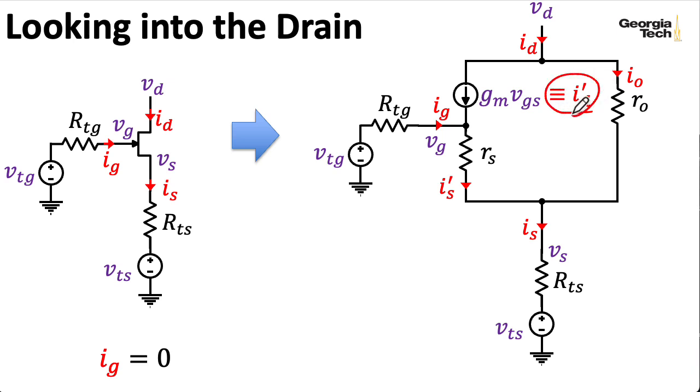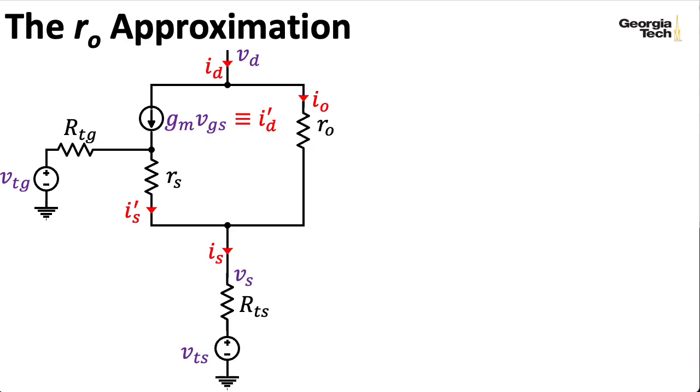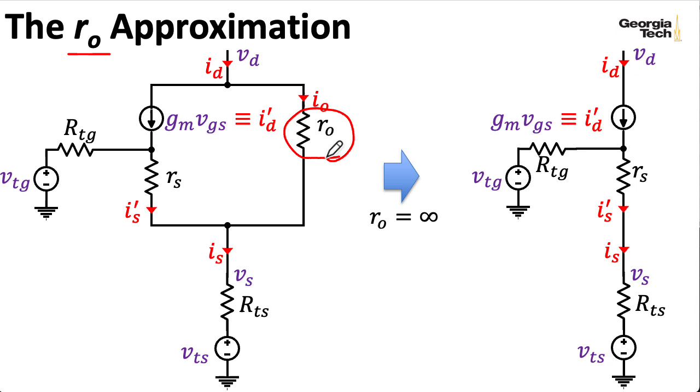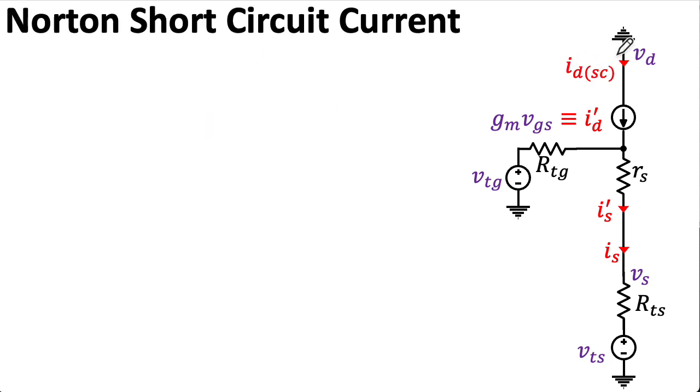Hence, what I've called ID prime, which is the part of the drain current that's not flowing through R0, is equal to IS prime, which is the part of the source current that's not flowing through R0. To compute the Norton equivalent short circuit current, I'm going to employ our R0 approximation, where we assume that this resistance is infinite. So I can basically take R0 out of the circuit. Hence, I don't need to make this distinction with primes anymore. So to compute the Norton current, I'm going to connect VD to ground, and I'm going to find IDSC.